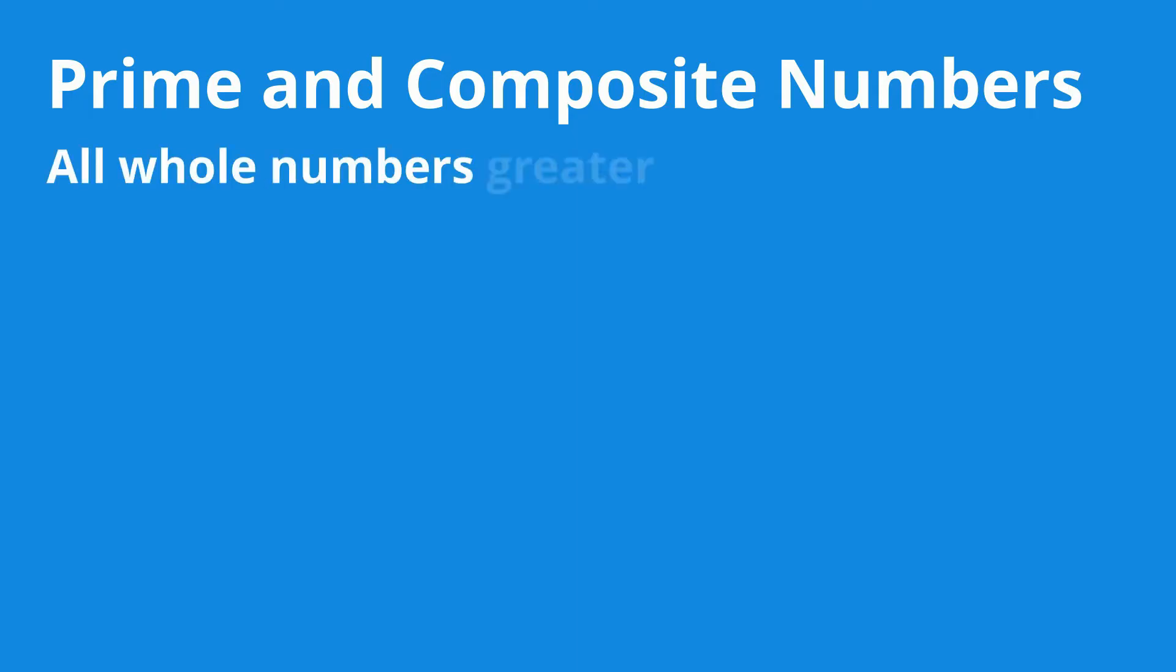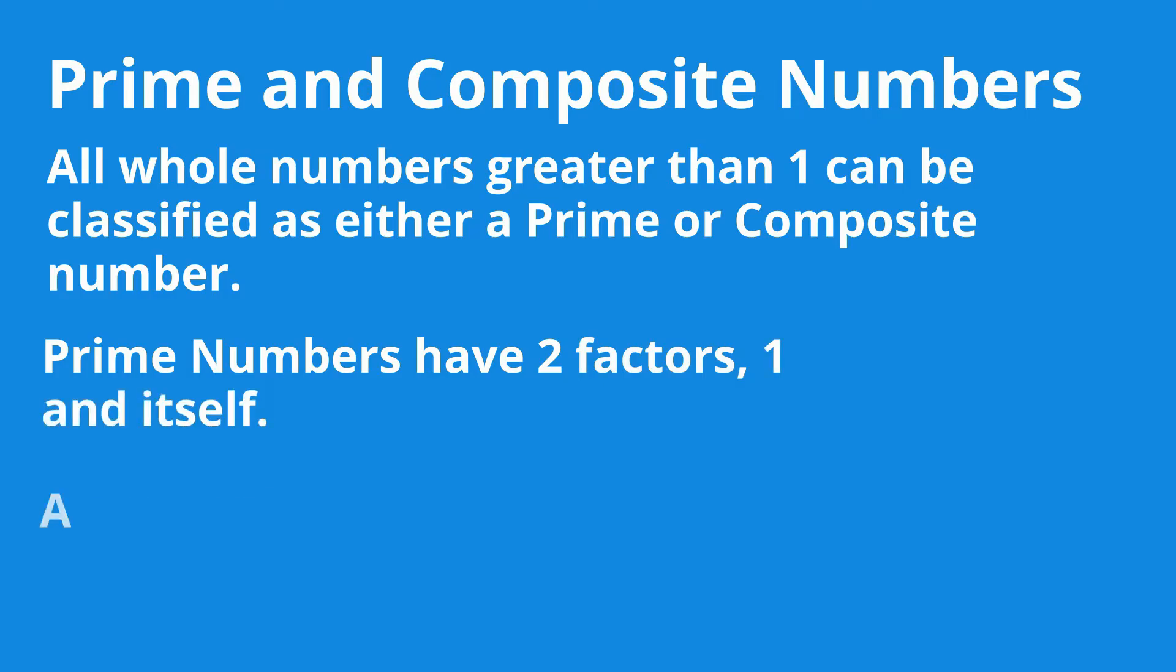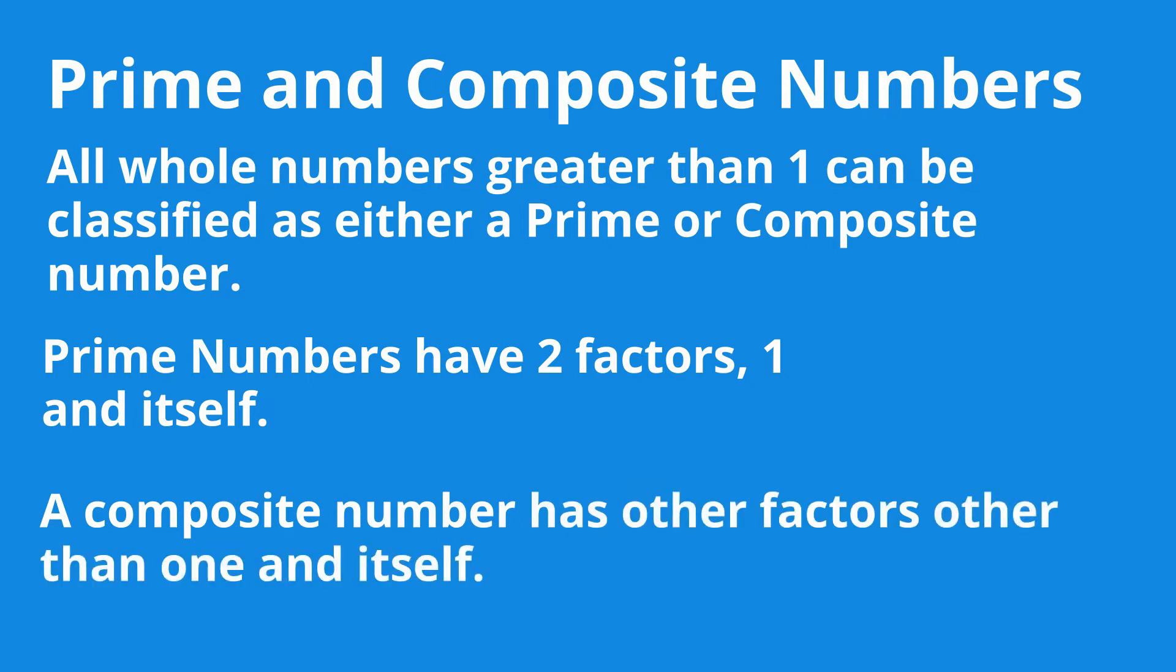All whole numbers greater than 1 can be classified as either prime or composite numbers. Prime numbers only have two factors, 1 and itself. A composite number has other factors other than 1 and itself.